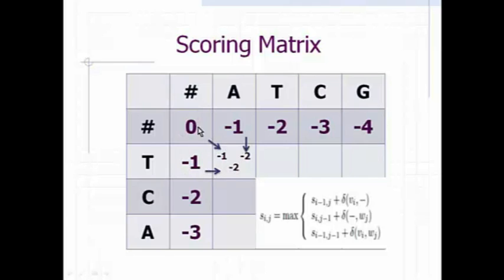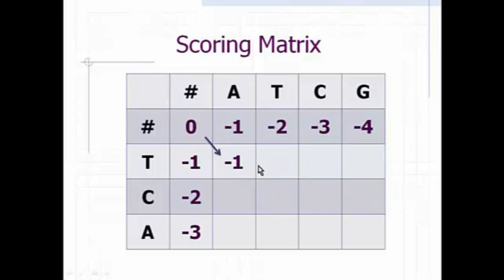Diagonally, here was 0 and we have below the character A and the sequence character is T. That is a mismatch and our mismatch score was minus 1. So 0 plus minus 1 gives minus 1. From the 3 values, the maximum is minus 1, so we put minus 1 here. For the next box, from the top we have minus 2 plus gap penalty minus 1, giving minus 3. But diagonally we have minus 1, and here the character is T and the sequence character is also T — this is a match and we had plus 2 for match. So minus 1 plus 2 gives plus 1, which is the maximum. So we put plus 1 here.